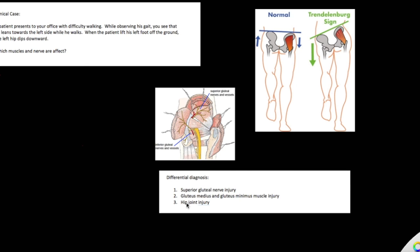We also have to take into account that hip joint injury can also cause the same clinical presentations. So the three different differential diagnoses here are: superior gluteal nerve injury, injury to the gluteus medius and gluteus minimus, or hip joint injury.